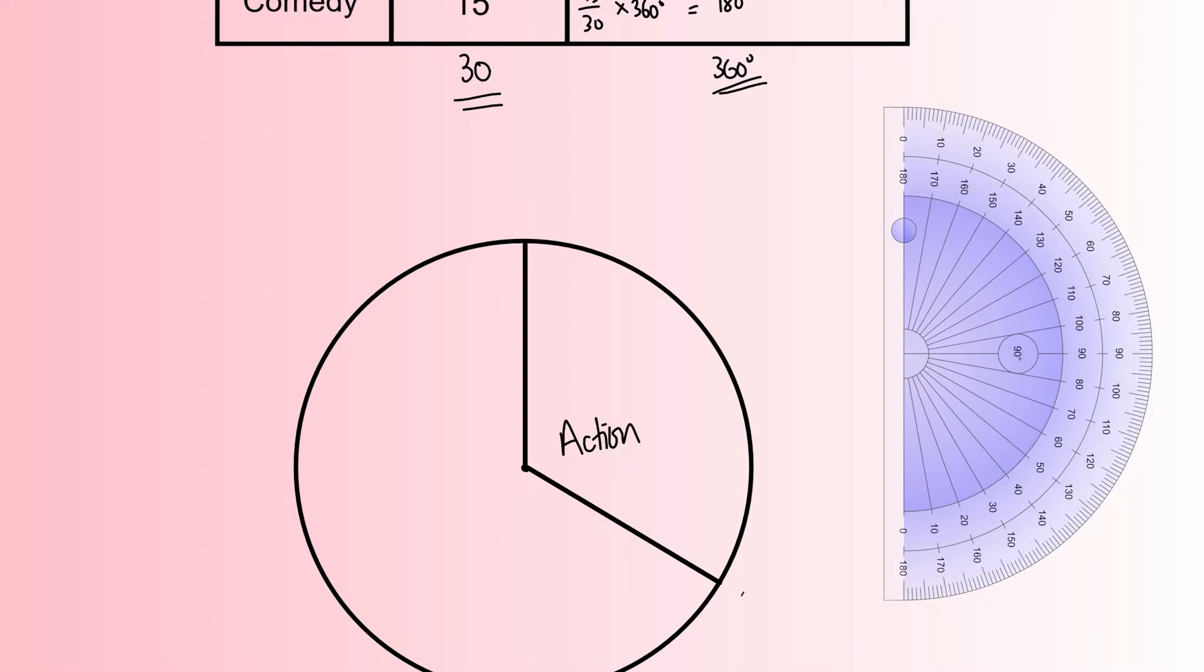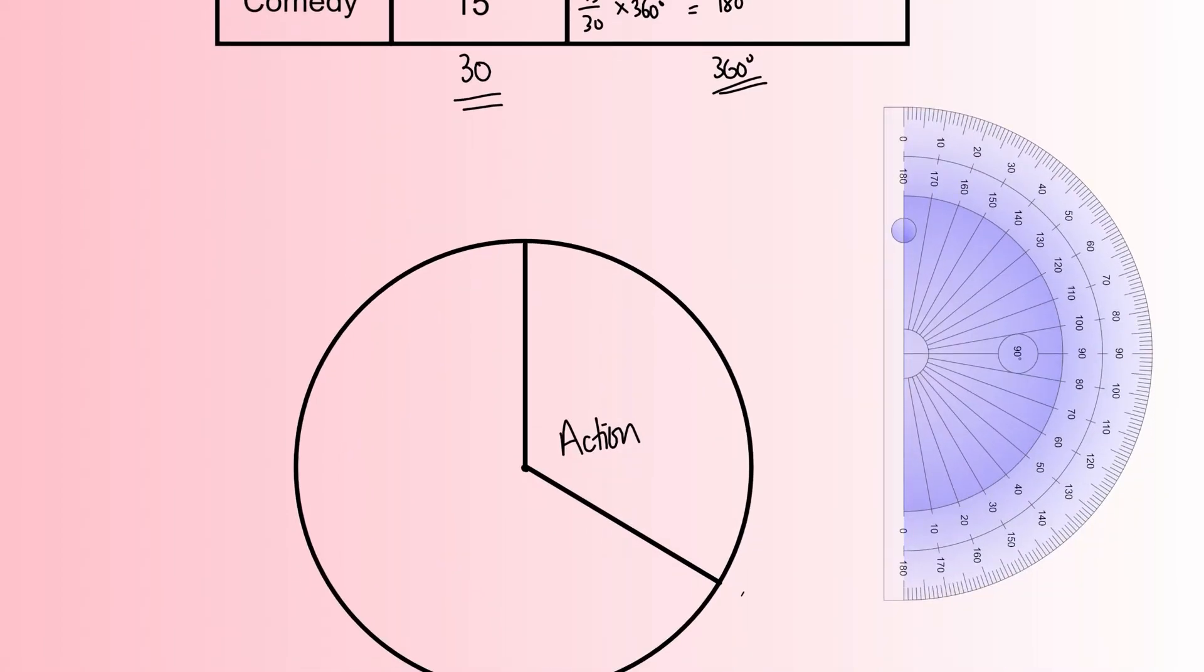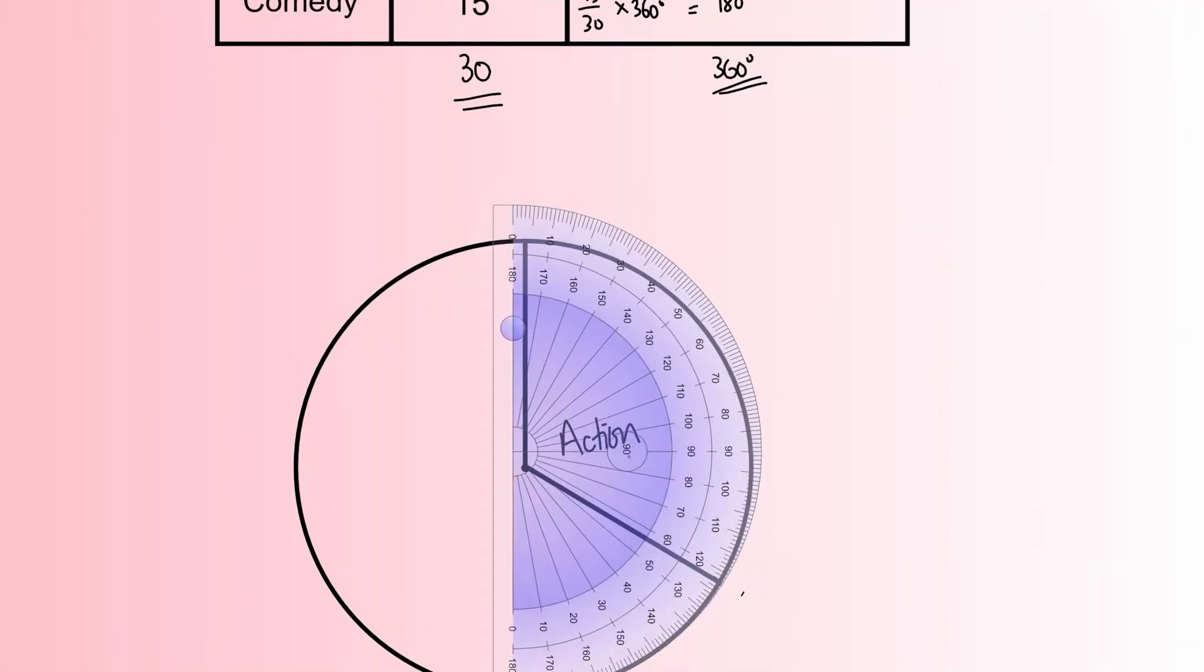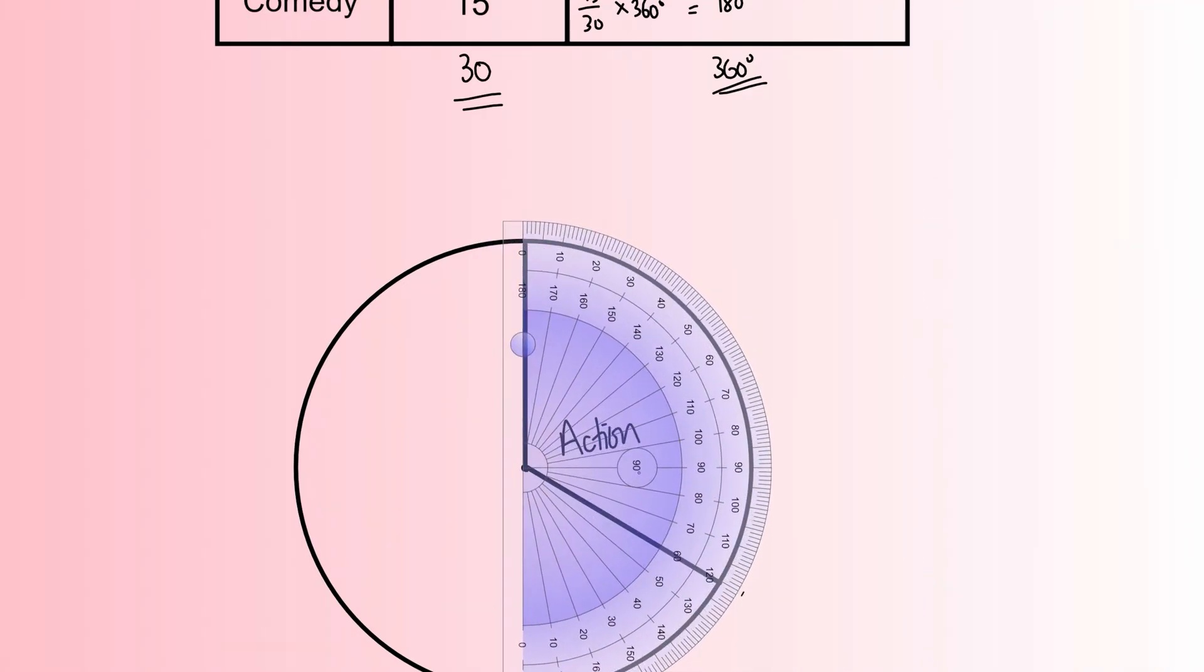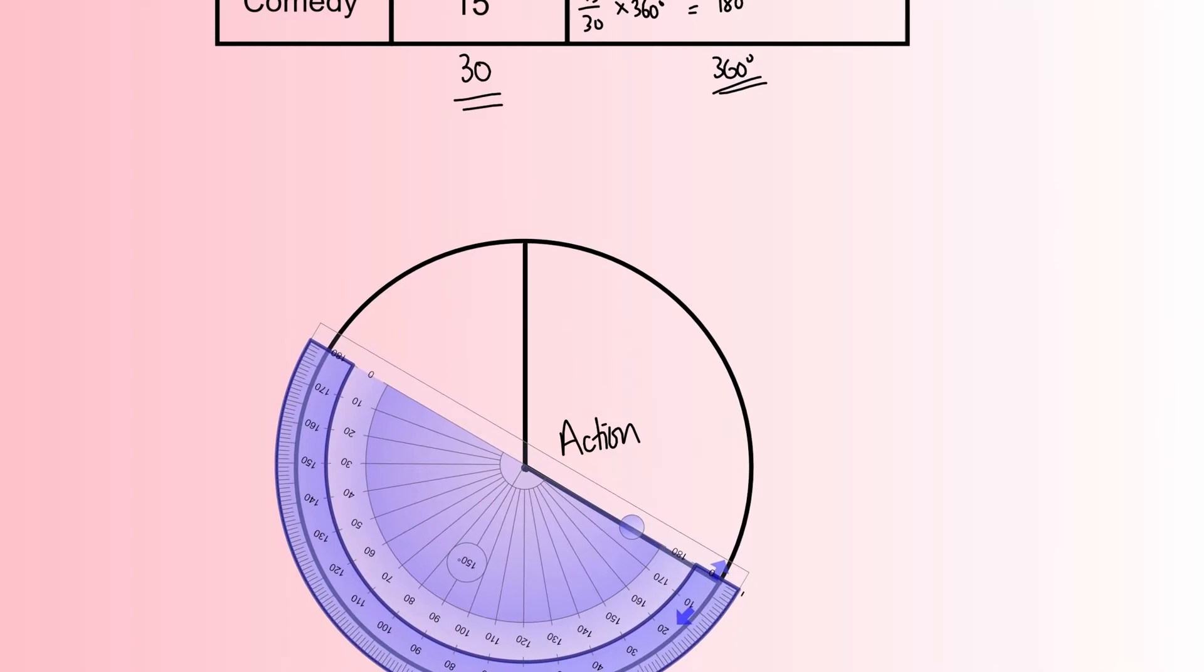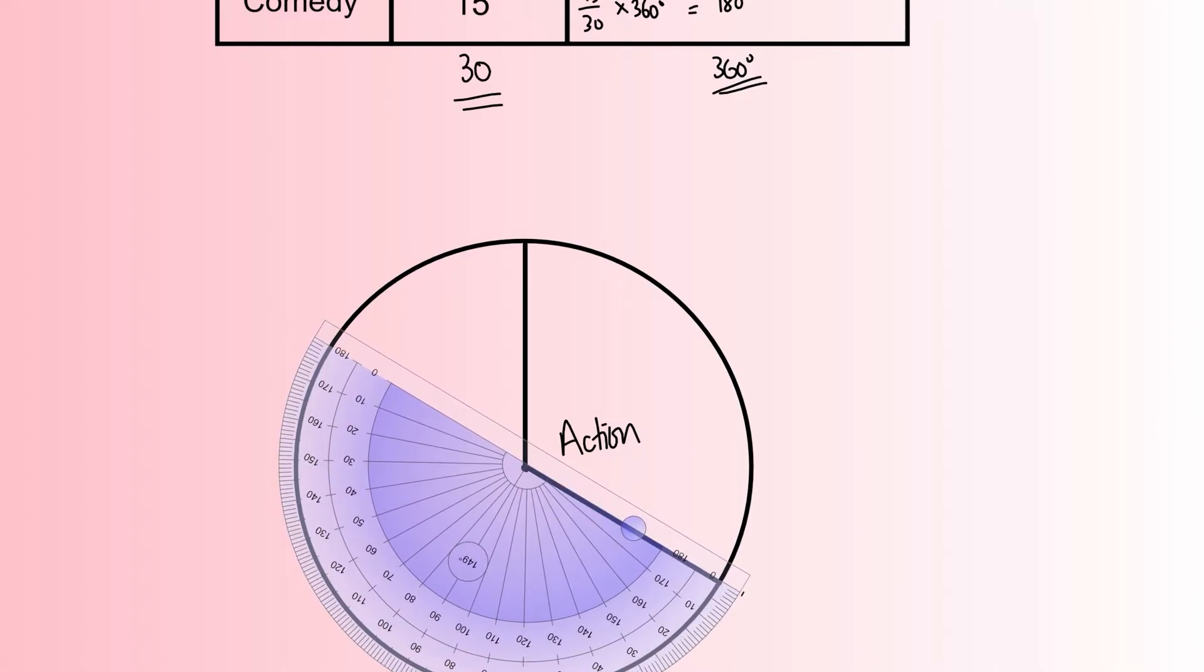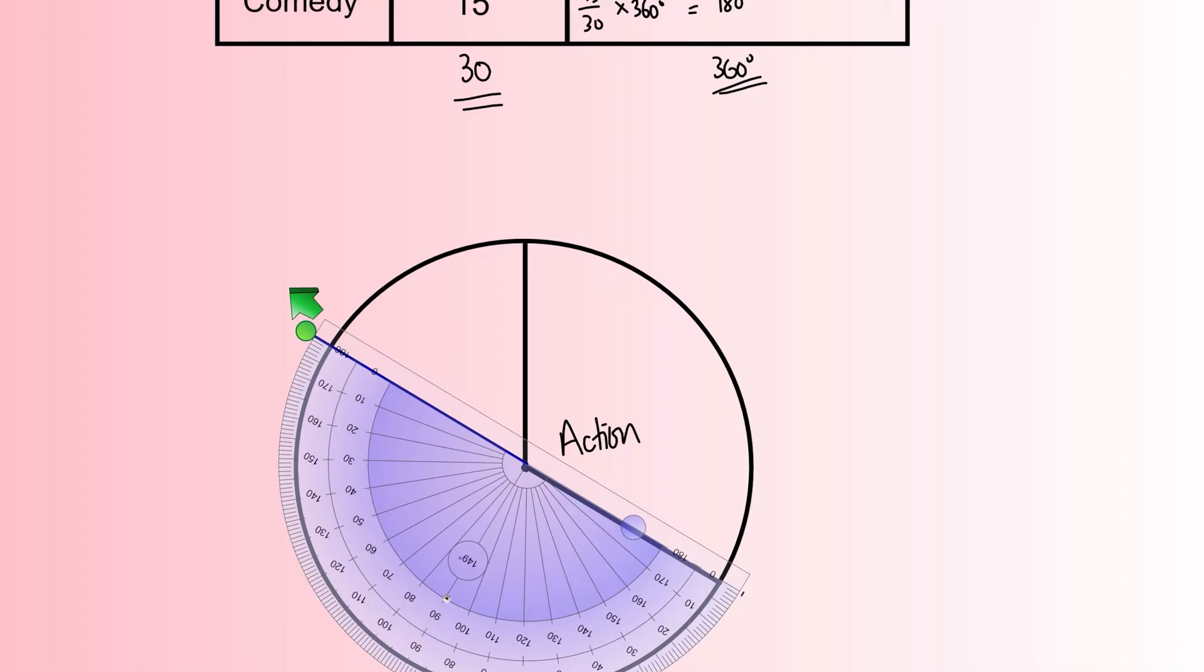You have to label each section with the relevant data from the table, not the angle. The next one is Horror. We've got to take the protractor, line it over the center, but this time the zero has got to line up with the previous line we finished. I'm going to spin it around until the zero lines up there, move it so it's perfectly in the center.